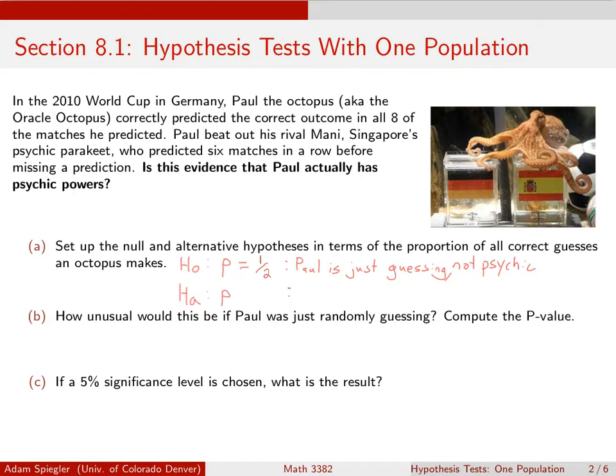And on the alternative hypothesis, this is the new interesting result that they're hoping to gather evidence to support. So in this case, what we're hoping to show is that Paul is psychic. And in terms of our population parameter here, what that would mean is that we're claiming that this proportion, P, is greater than one half. So those would be our two competing claims.